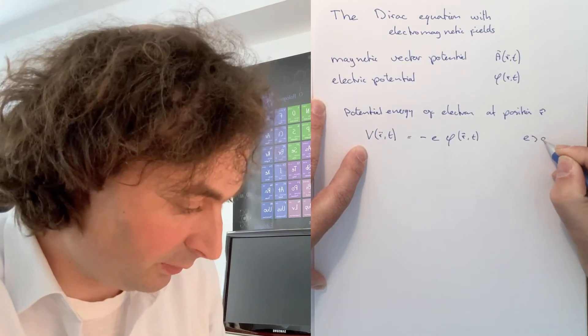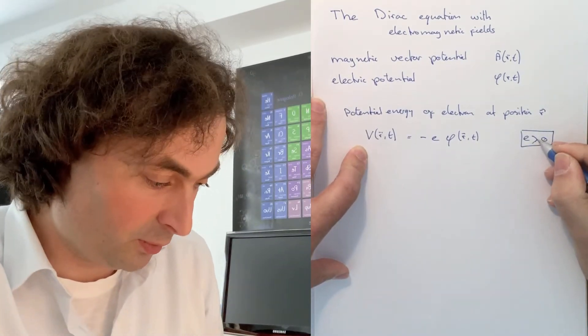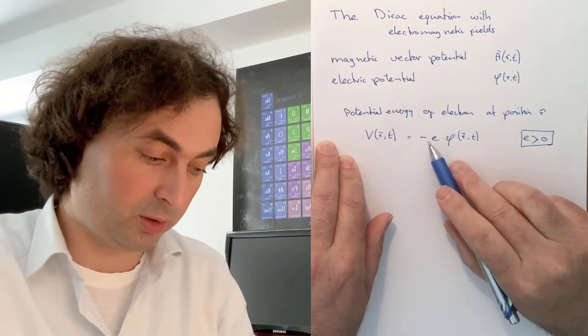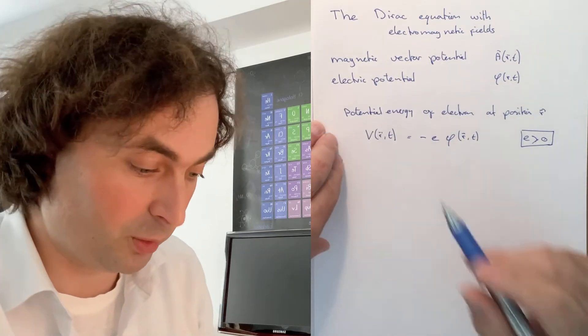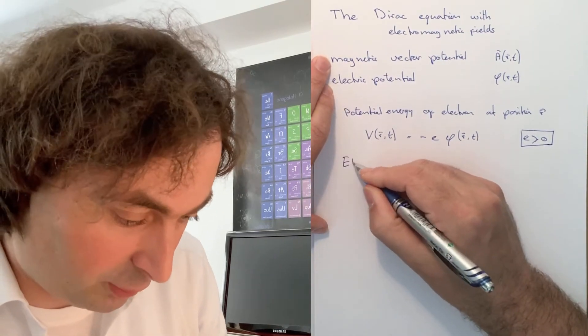And note that we will take e to be a positive constant, so the charge of an electron is minus e. This is just the charge q times the potential, which gives you the potential energy.